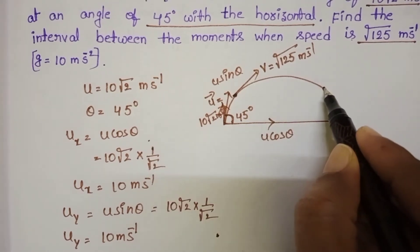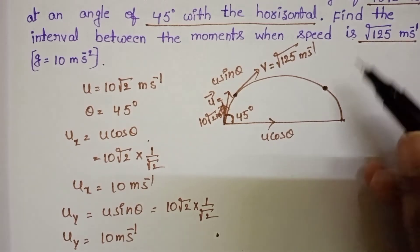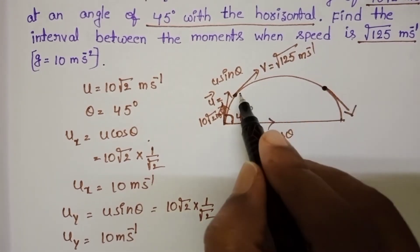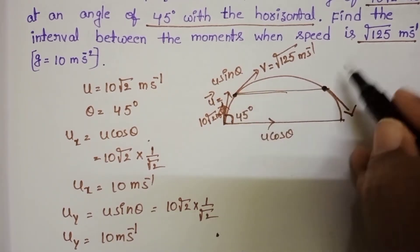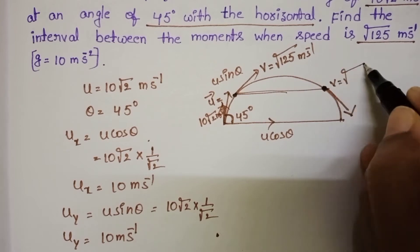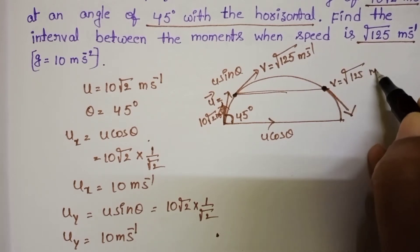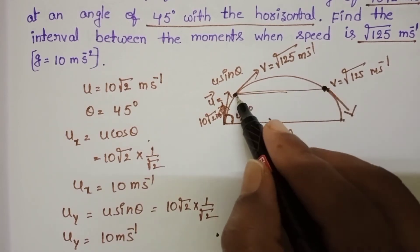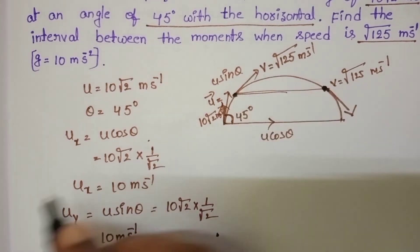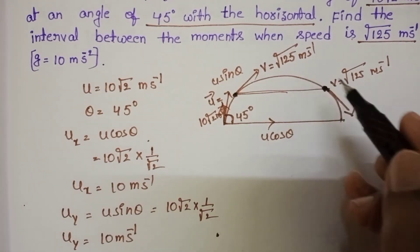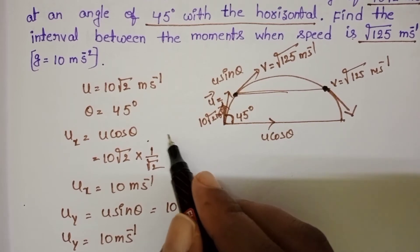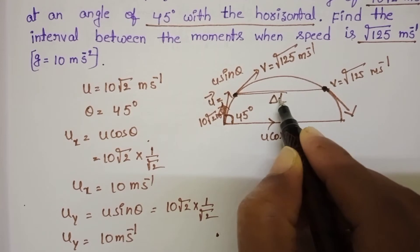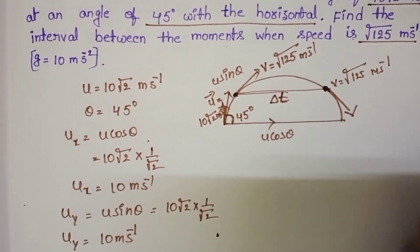At one point the particle is moving upward, and at another point at the same height the particle is moving downward, with both having speed √125 meter per second. The time interval between these two movements, let it be delta t. So we have to find out the value of delta t.